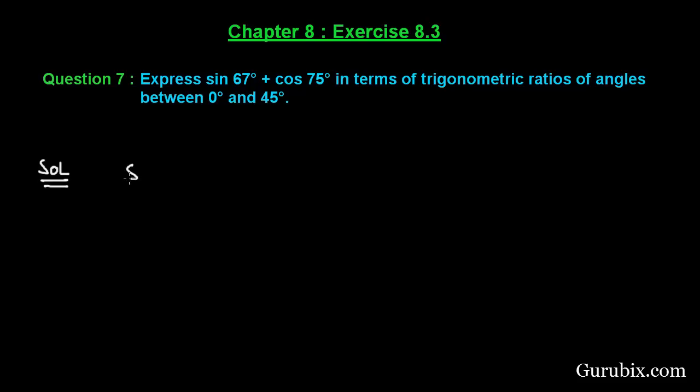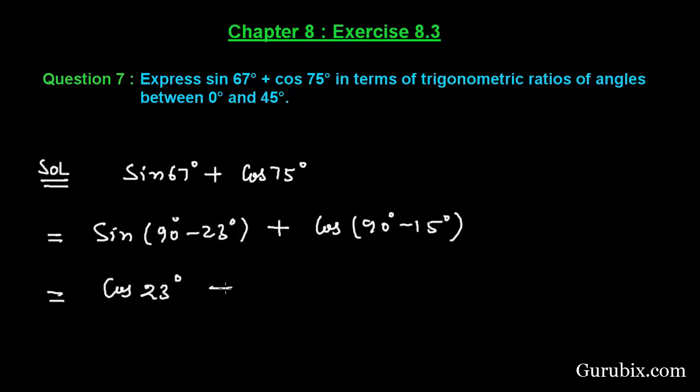We are given sin 67° + cos 75°. We can write sin 67° as sin(90° - 23°) plus cos(90° - 15°). This equals cos 23° + sin 15°.